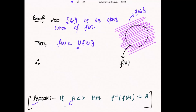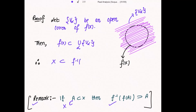So let's replace A with X, since X is also a subset of X. Then we write that f inverse of f(X) contains X, or equivalently, X is a subset of f inverse(f(X)). And because f(X) is contained in the union of V_α, this is further a subset of f inverse of the union of V_α, which equals the union of f inverse(V_α).